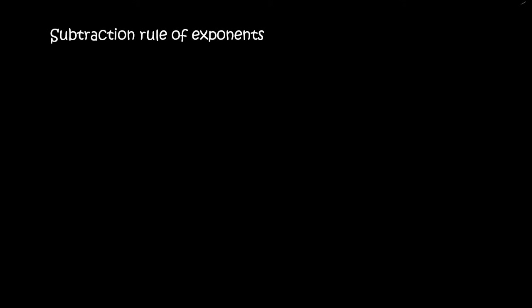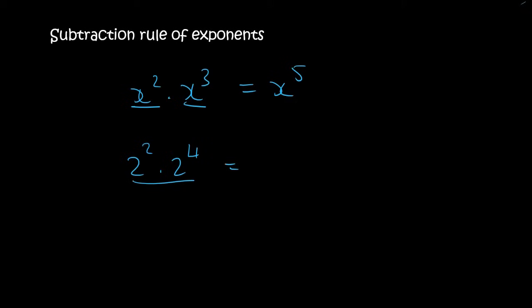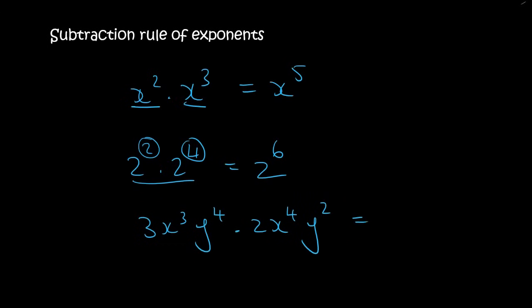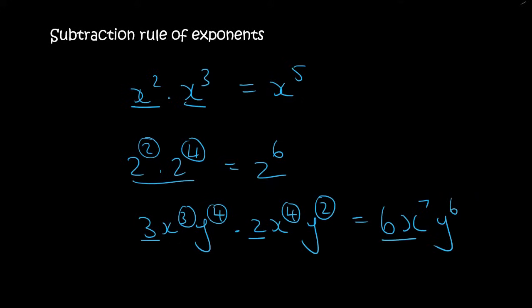In the previous lesson we looked at the addition rule of exponents. Let's quickly revise. When the bases are the same you add the exponents — you leave it as a 2 and then you add to get 6. When you have something like 3 times 2, the numbers don't have exponents so you multiply them normally to get 6. Then for the x's you add the exponents to get 7, and for the y's you add the exponents to get 6.